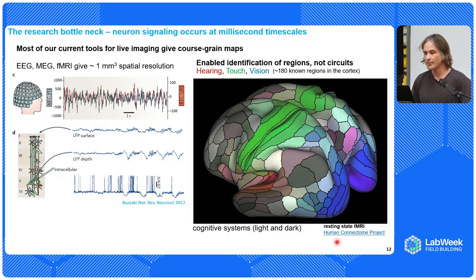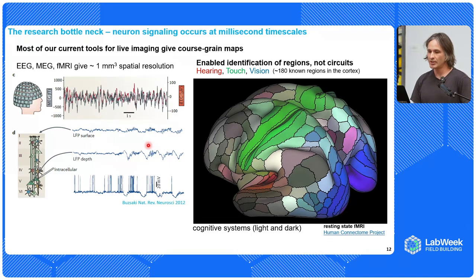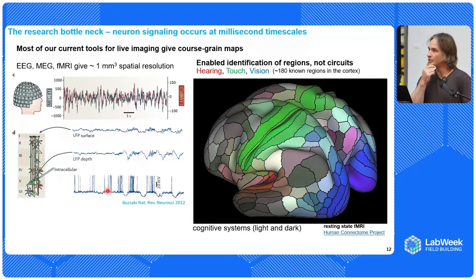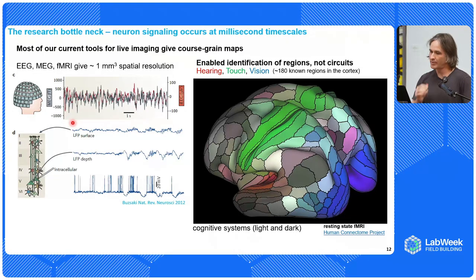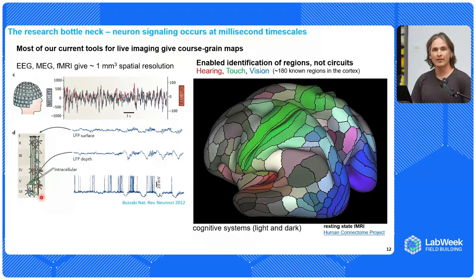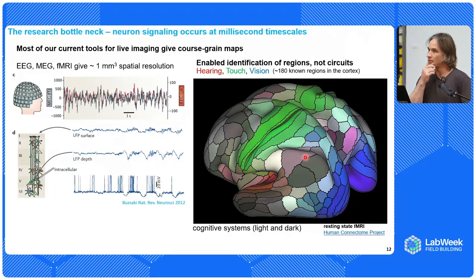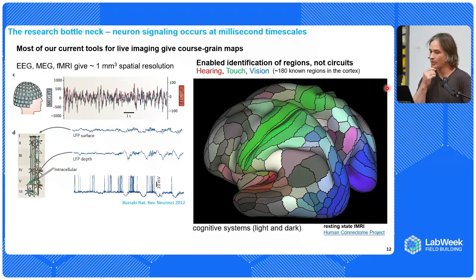Most of our current tools for live cell imaging give us coarse-grained maps. EEG, MEG, and fMRI give us voxel resolution, which is about a cubic millimeter. These fields are back-calculated from potentials generated within the brain. But they have allowed us to uncover some amazing features, such as centers for hearing, touch, and vision. As of today, there are roughly 180 known regions in the cortex, gathered by the Human Connectome Project.